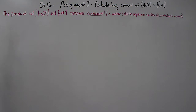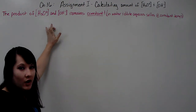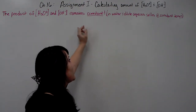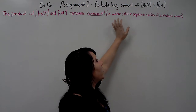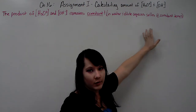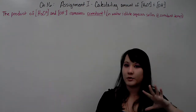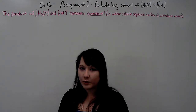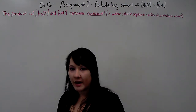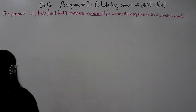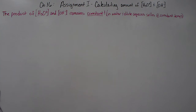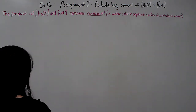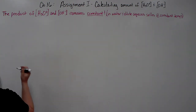The product of hydronium and hydroxide yields a constant. That's when you have water or dilute aqueous solutions at a constant temperature. This rule is based on temperature remaining constant, not changing. The first thing you need to know is what this constant is and how it's derived.